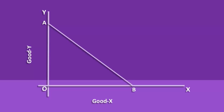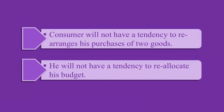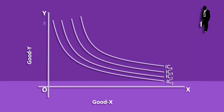The consumer is in equilibrium when he maximizes his utility. At that point, the consumer will not have a tendency to rearrange his purchases of the two goods, nor will he have a tendency to reallocate his budget. To analyze the equilibrium of the consumer, we have to integrate the Indifference Map with the price line. The consumer is going to choose any one of the combinations on the price line.